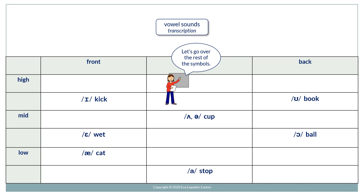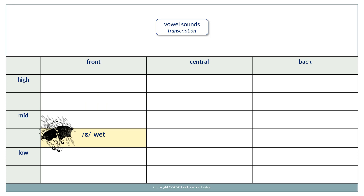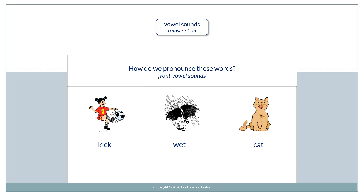And now let's go over the rest of the symbols. I - kick. EH - wet. AH - cat. How do we pronounce these words? Wet. Cat.